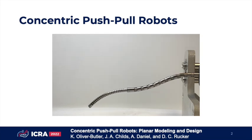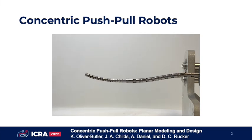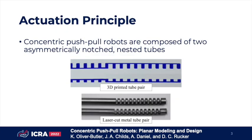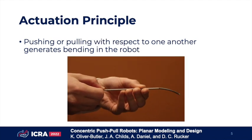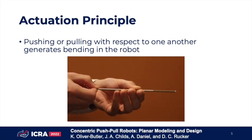Concentric push-pull robots combine the simplicity, miniaturization, and open lumen of concentric tube robots with the kinematic advantages and stability of push-pull multi-backbone designs. They are composed of two asymmetrically notched nested tubes. The tips of the tubes are fixed to one another with their backbones opposing each other, which we can see in both pairs of tubes. Pushing or pulling with respect to each tube generates bending in the tube pair, as we can see here.